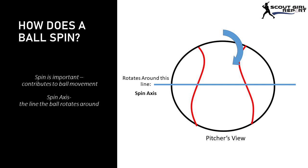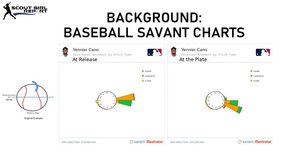Looking at the ball on the right, I want you to take away that the ball is moving around that blue line and spinning toward us. This would be an example of a pitch with perfect backspin from the pitch's perspective. These Baseball Savant charts accomplish the same thing as that graphic, but don't show the spin axis since several pitch types are represented with different axes. The colored blocks on the clock show the angle the ball is spinning, and the spin axis is always perpendicular to those blocks.